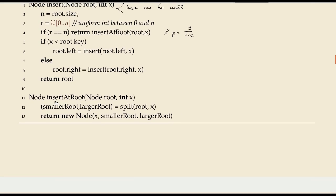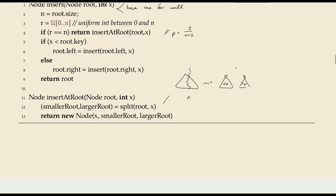Insert-at-root is itself very simple: it says split the subtree of root around the key x. Conceptually, given a tree and a certain value x, there's a way to cut this tree in half to have all keys less than x and all keys greater than x in two separate trees. Once we have that, we can simply add x as the common root of these two trees and return it. The magic is in the split procedure.